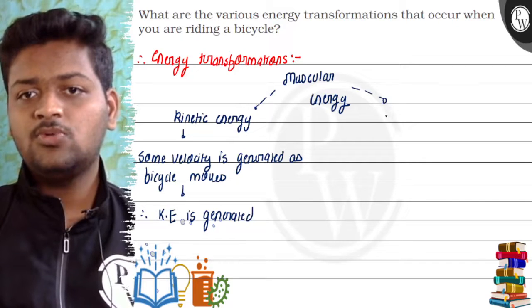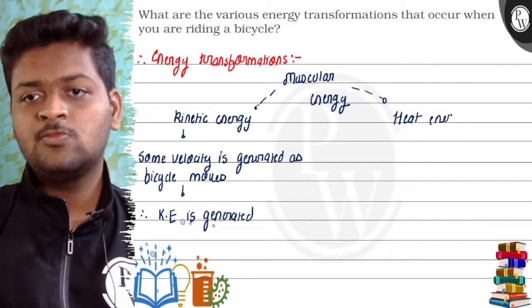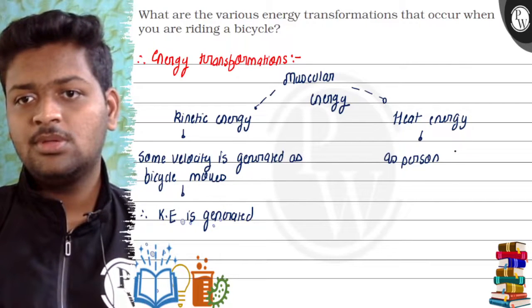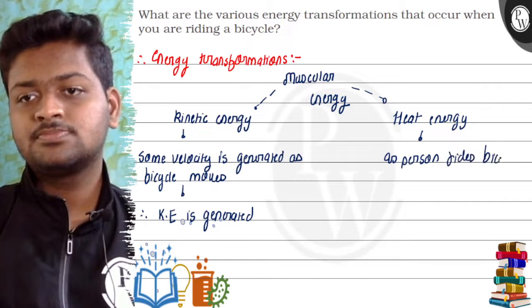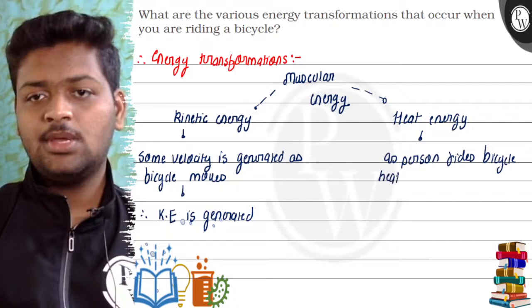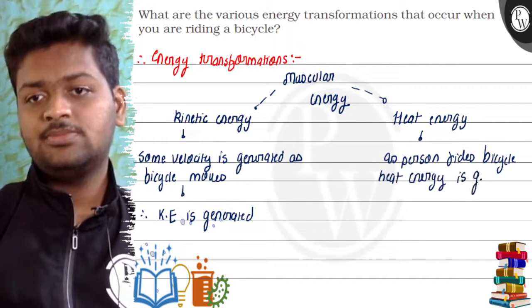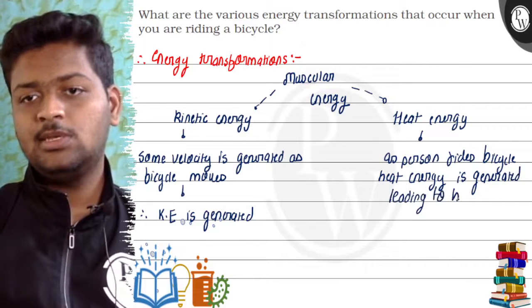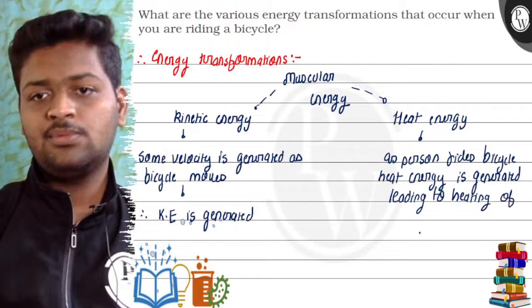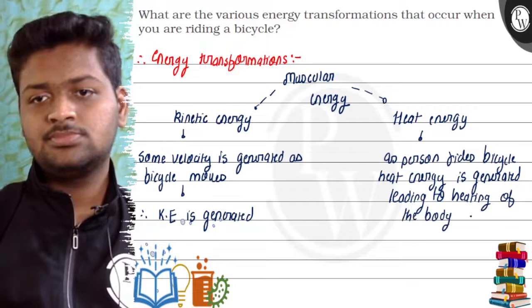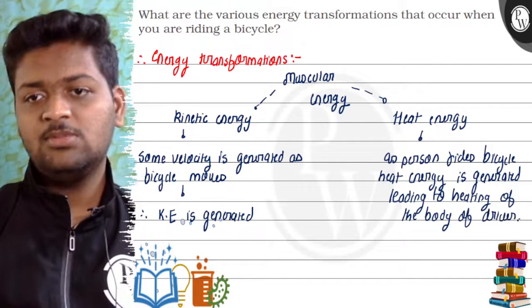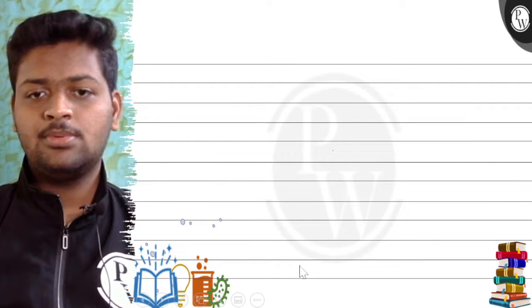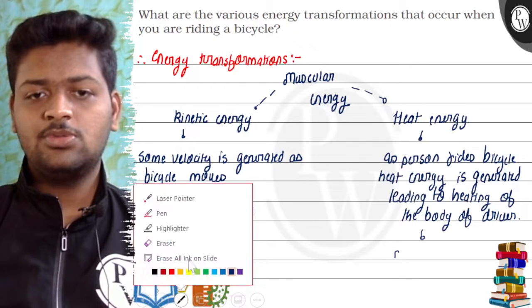There are two types of energies formed. Another is heat energy. As a person rides the bicycle, heat energy is generated, leading to heating of the body of the driver, which in turn leads to sweating.